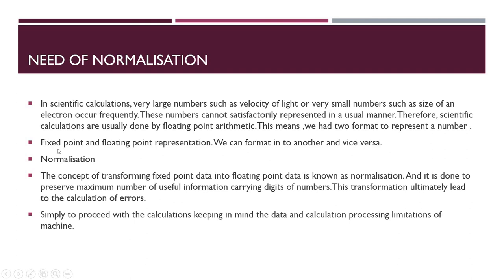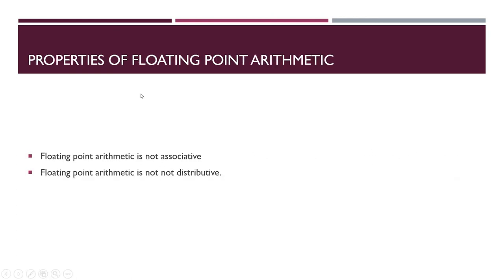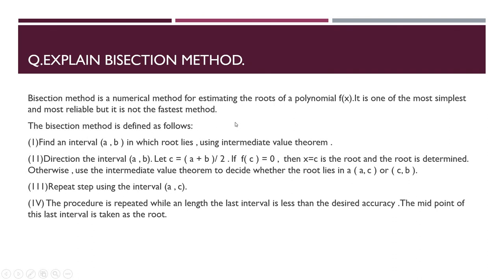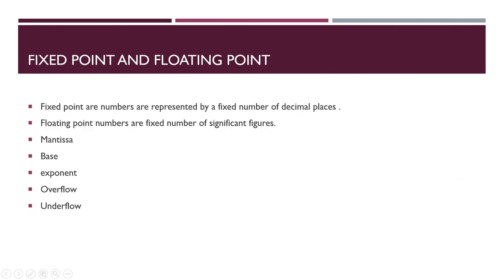The process of transforming between these formats is called normalization. The concept of transforming fixed point data into floating point is known as normalization, and it serves to preserve the maximum number of useful information-carrying digits of numbers. This ultimately simplifies the calculation of error. We do this to proceed with calculations while keeping in mind the data and processing limitations of machines. Properties of floating point arithmetic: floating point is not associative and not distributive.